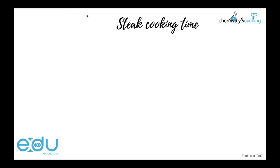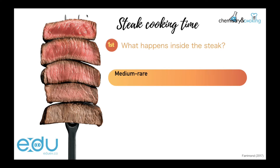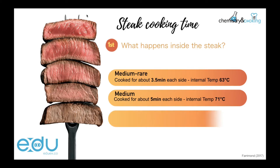We're going to look at how to cook a steak, focusing on steak in this video. Steak can be cooked to various levels of doneness. First, medium rare, which needs about three and a half minutes each side with an internal temperature of 63 degrees Celsius. For medium, we cook it longer — five minutes — and at a higher internal temperature. Well done takes even longer, reaching 74 degrees Celsius internally.